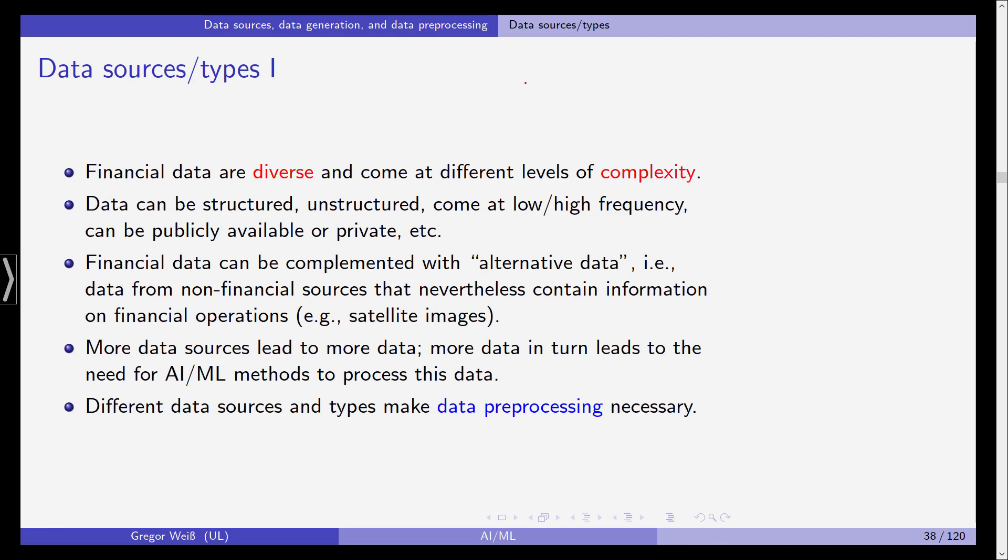The data can also be publicly available or private. If it's disclosed by firms, like a balance sheet or annual report, it's publicly available. But sometimes we also have private data that is only available to one company and is actually a business secret.